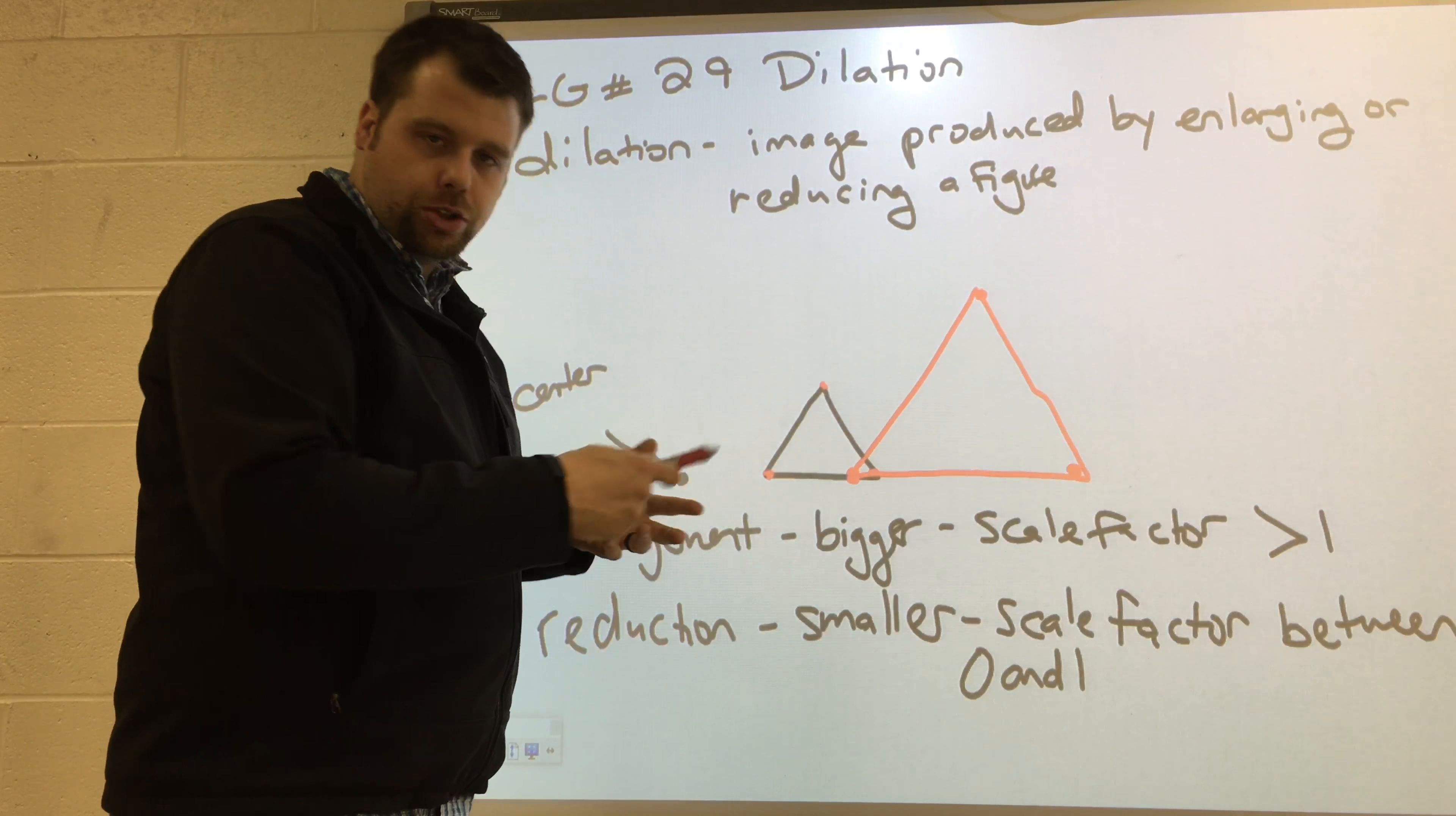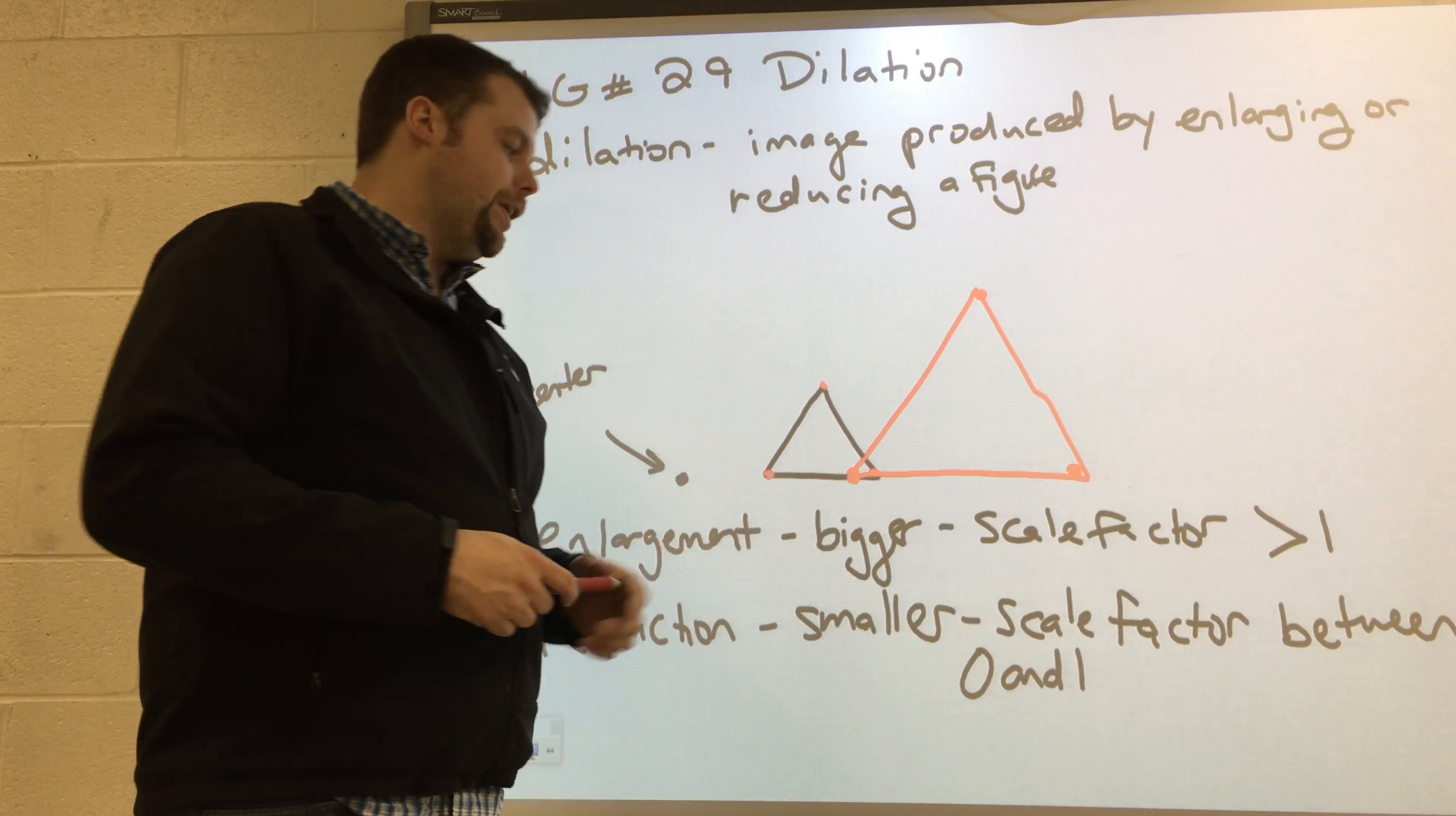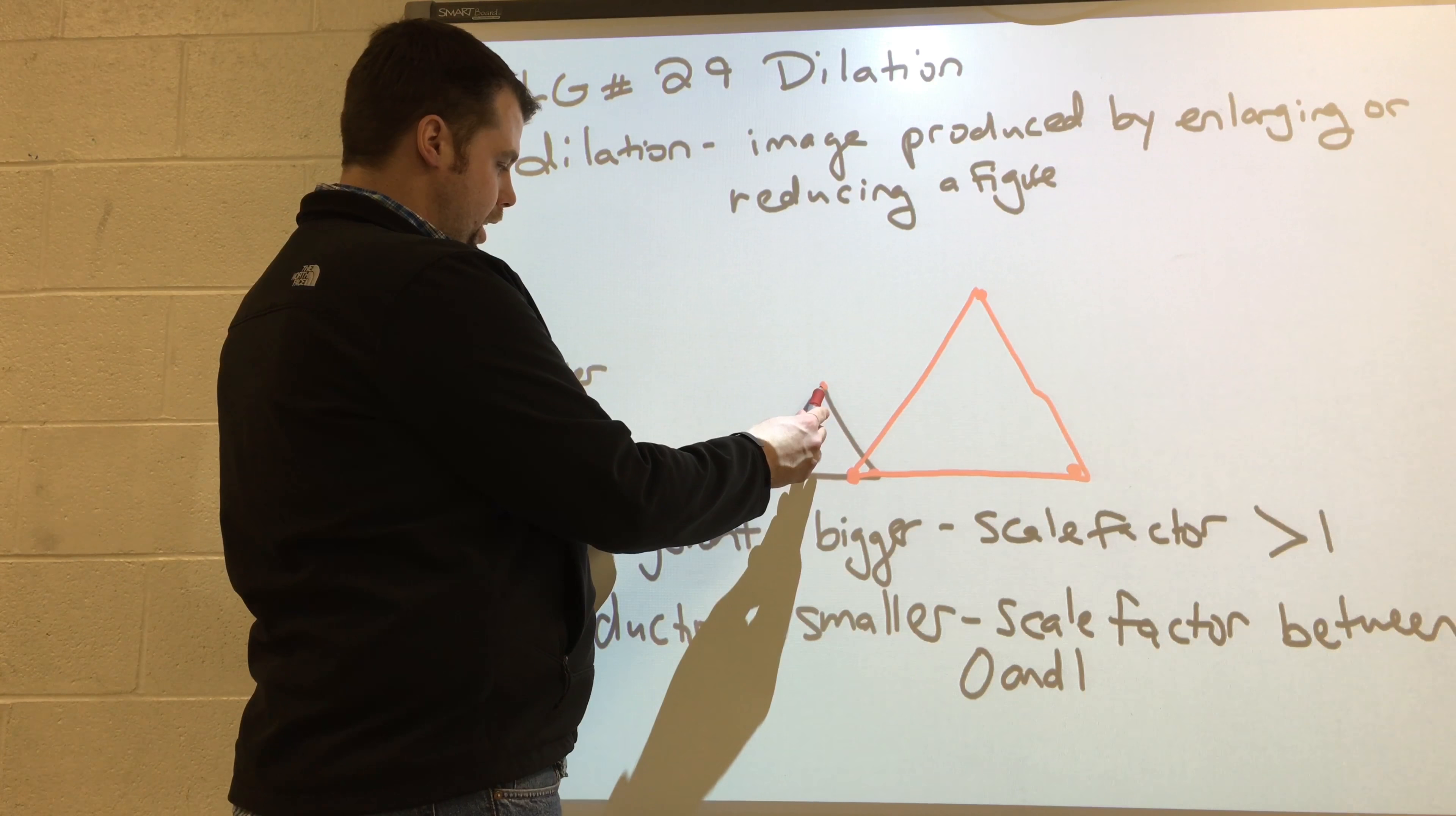Let's say I want to make a smaller triangle. I want to reduce it or come up with a reduction. Well I need to have a scale factor between zero and one. So let's do a half. So what I'm going to do is I'm going to measure this distance and I'm going to cut it in half.